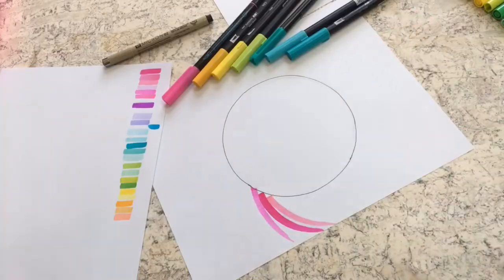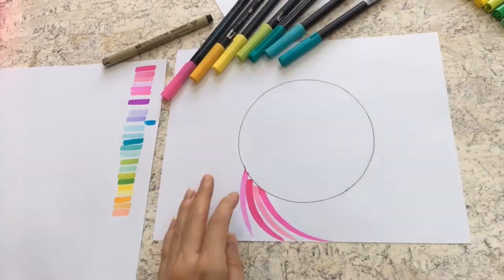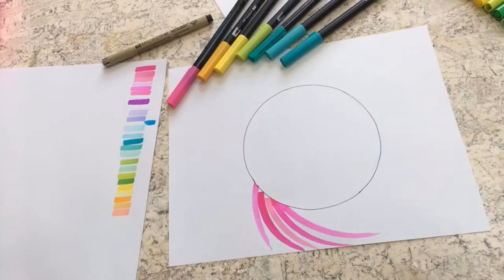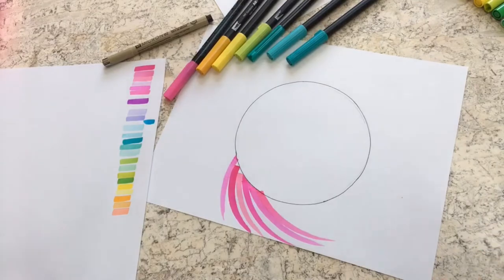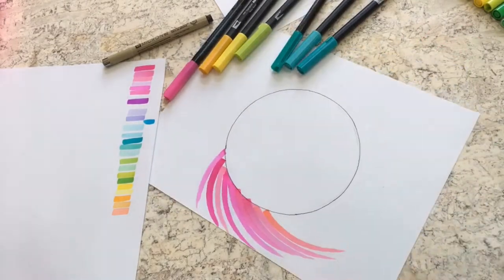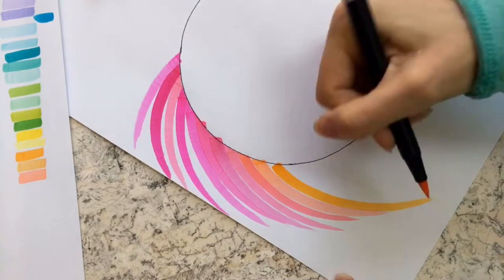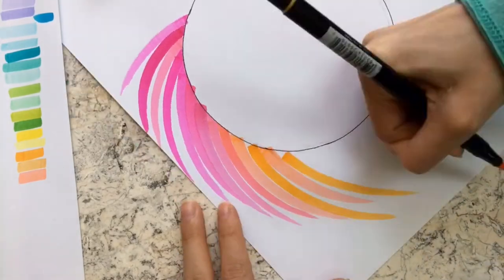I like the spokes of my pinwheel to be very close to one another so that there is no white space between them. So I line up my brush pen so that the very tip is touching the spoke next to it. You can choose to make the spokes of your pinwheel however close or far from each other you want.